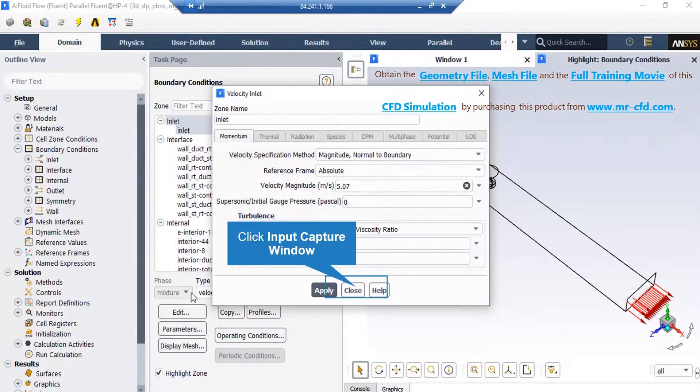In the appeared window, under the momentum tab, you can see that the velocity magnitude section has a value of 5.07 meters per second.